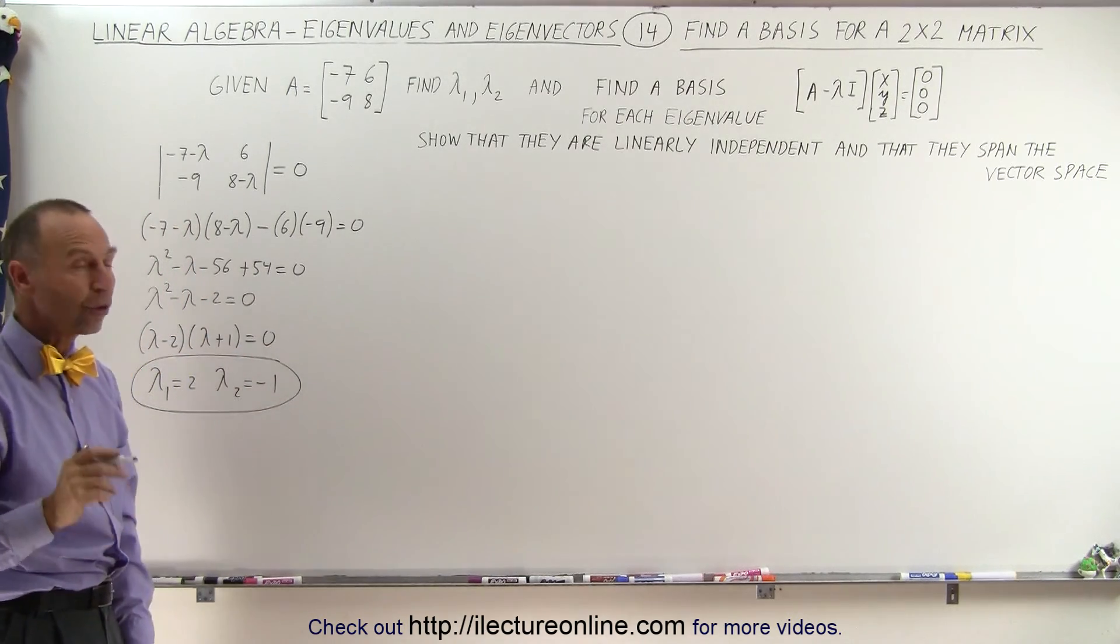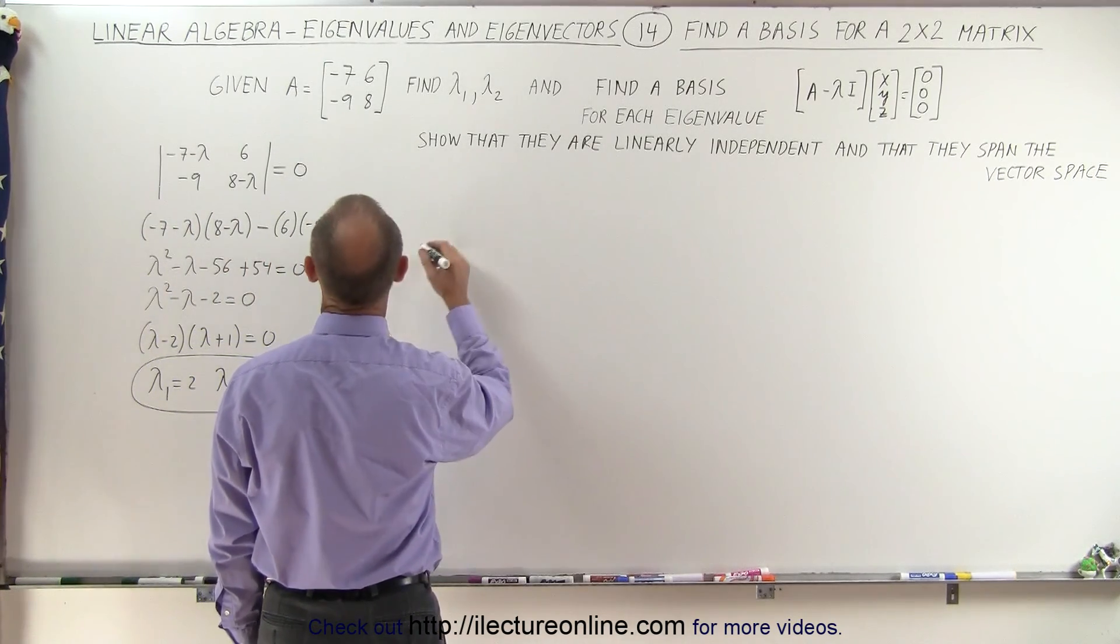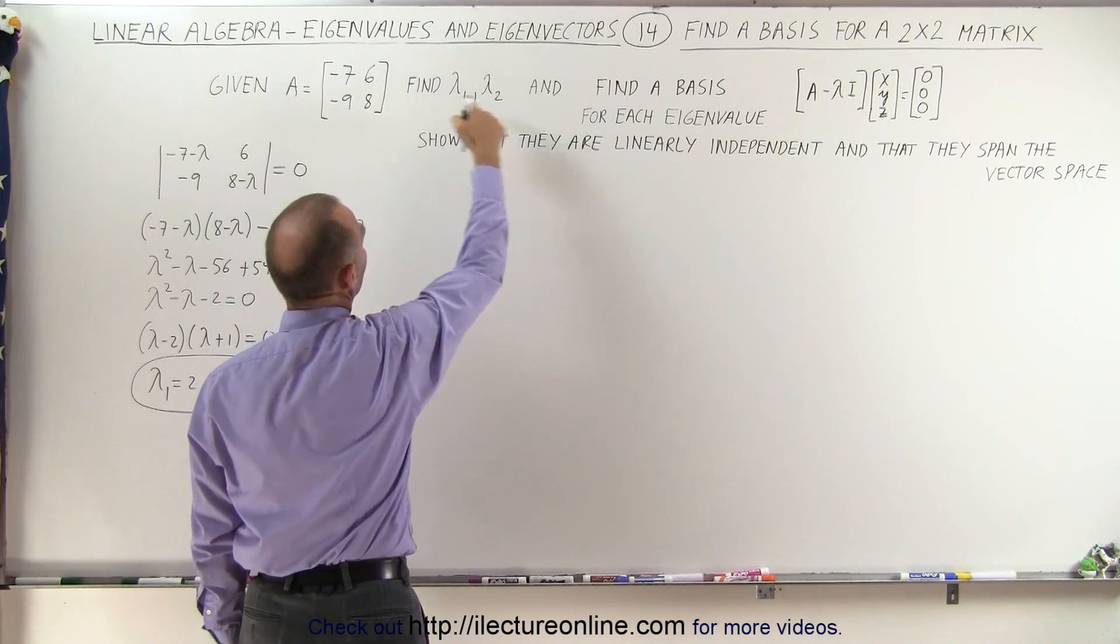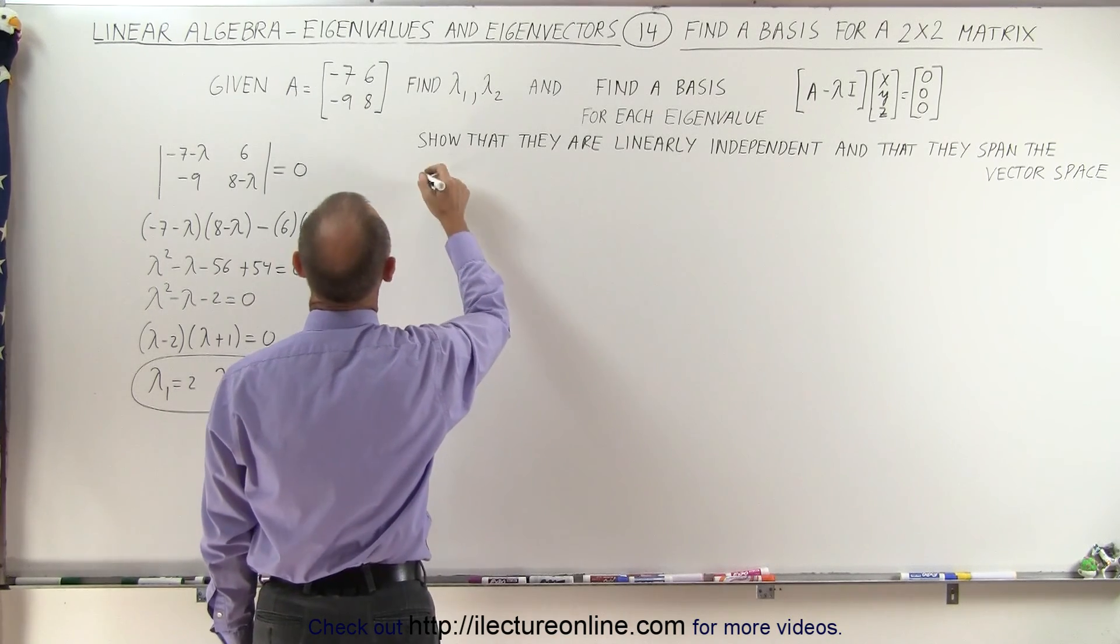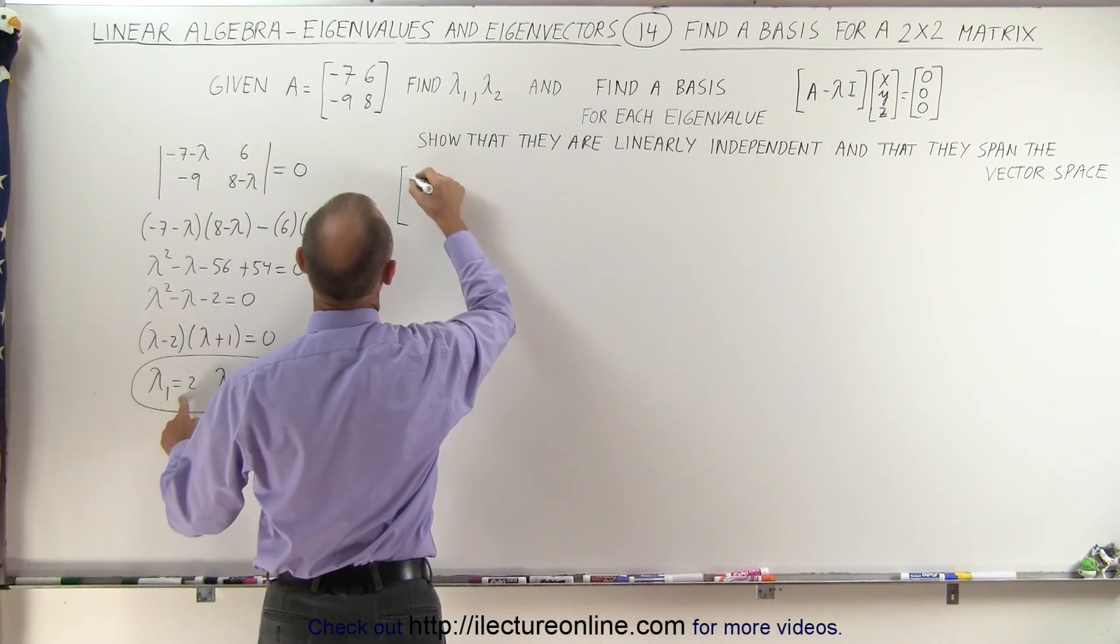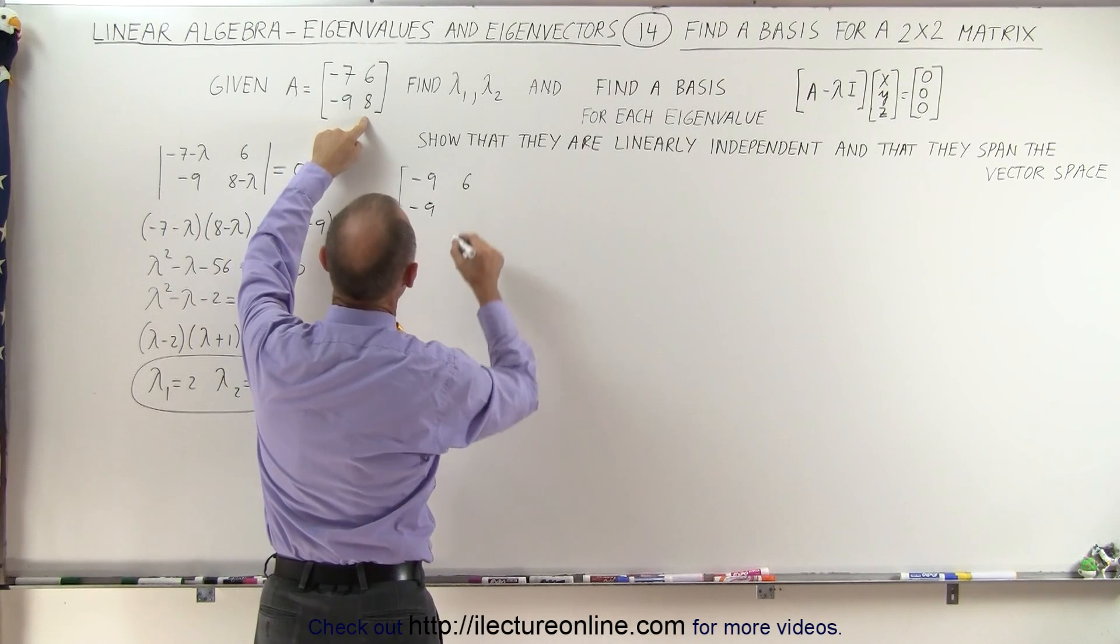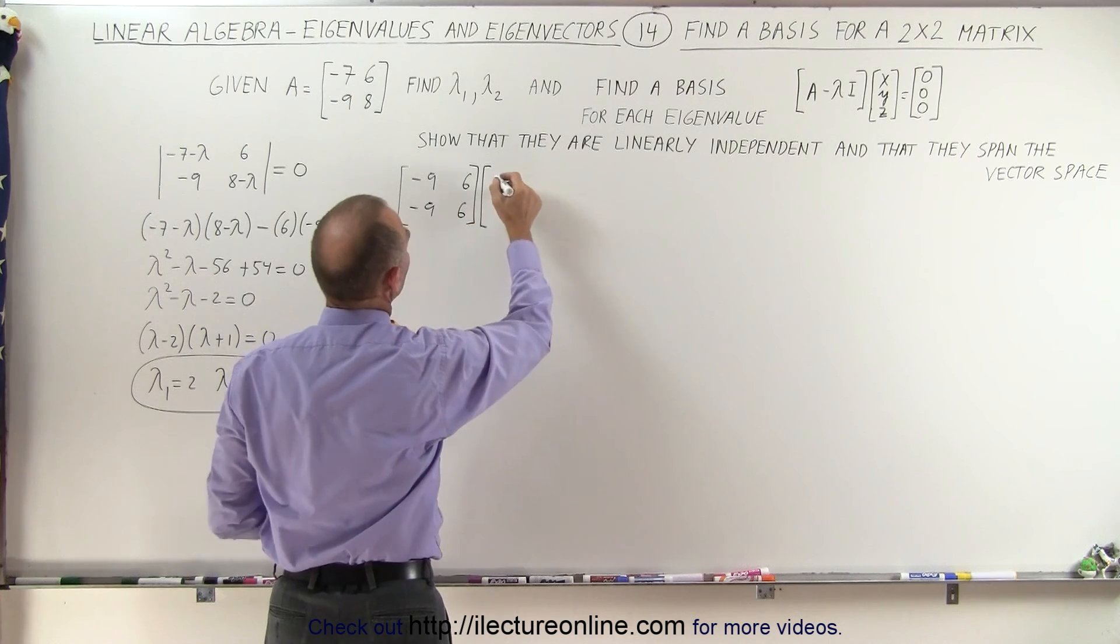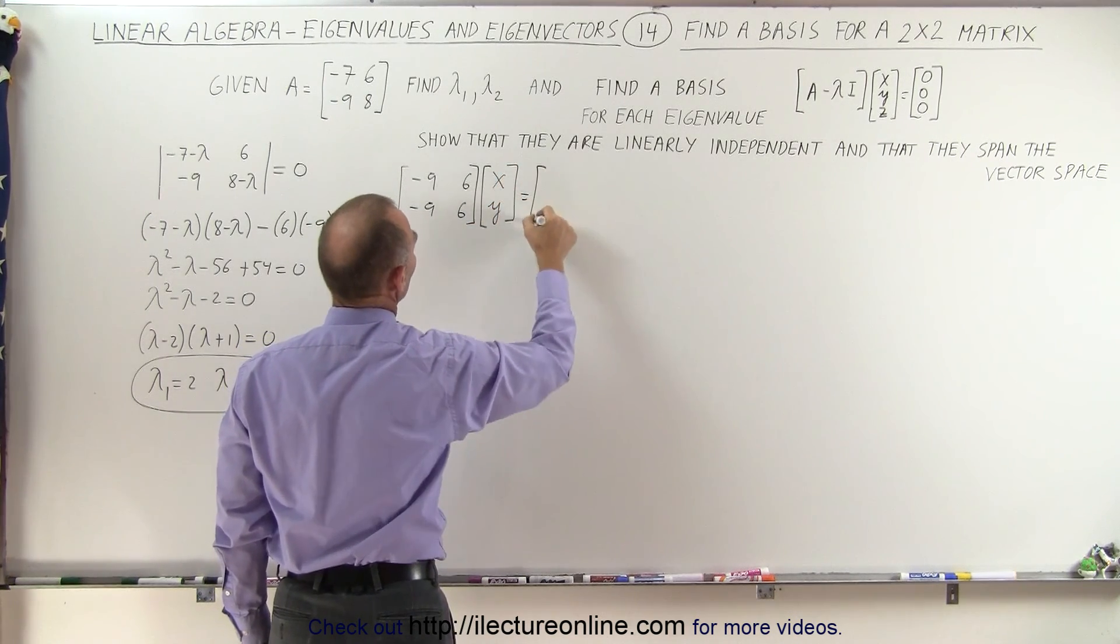We now find the associated eigenvectors with those. Starting with lambda sub 1 equals 2, we subtract lambda sub 1 from the diagonals, and we multiply that matrix times the eigenvector. So we get minus 7 minus 2, that's minus 9, 6 minus 9, and 8 minus 2 is 6. So we multiply that matrix times x and y, that's the eigenvector, and set it equal to the 0 vector.